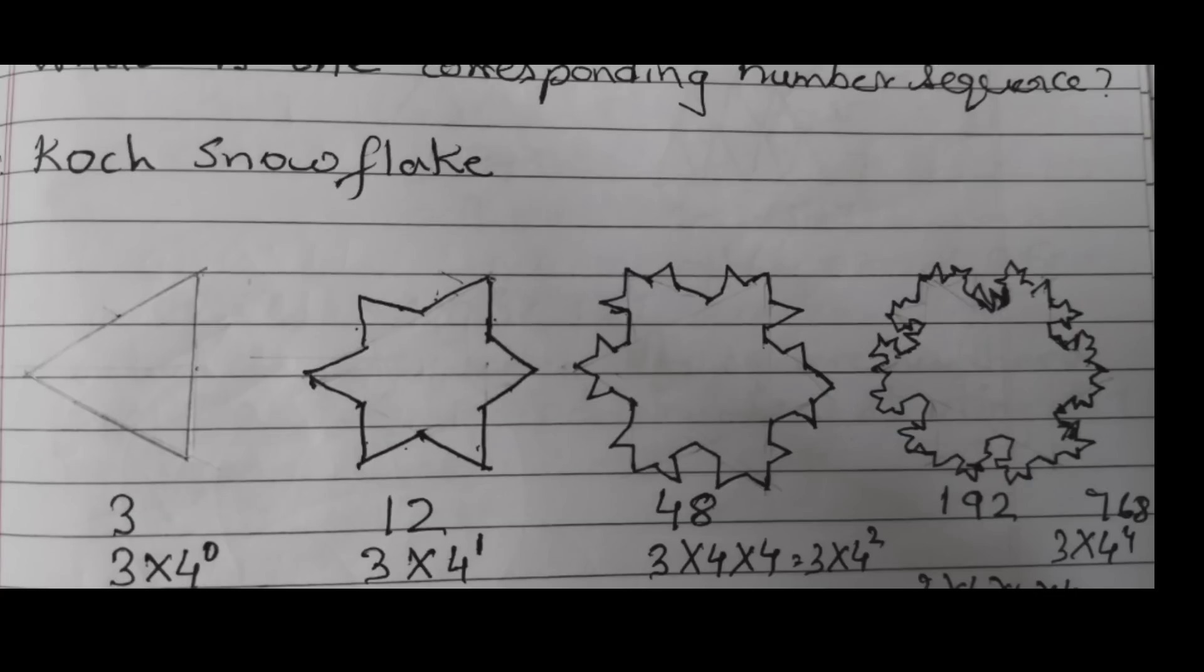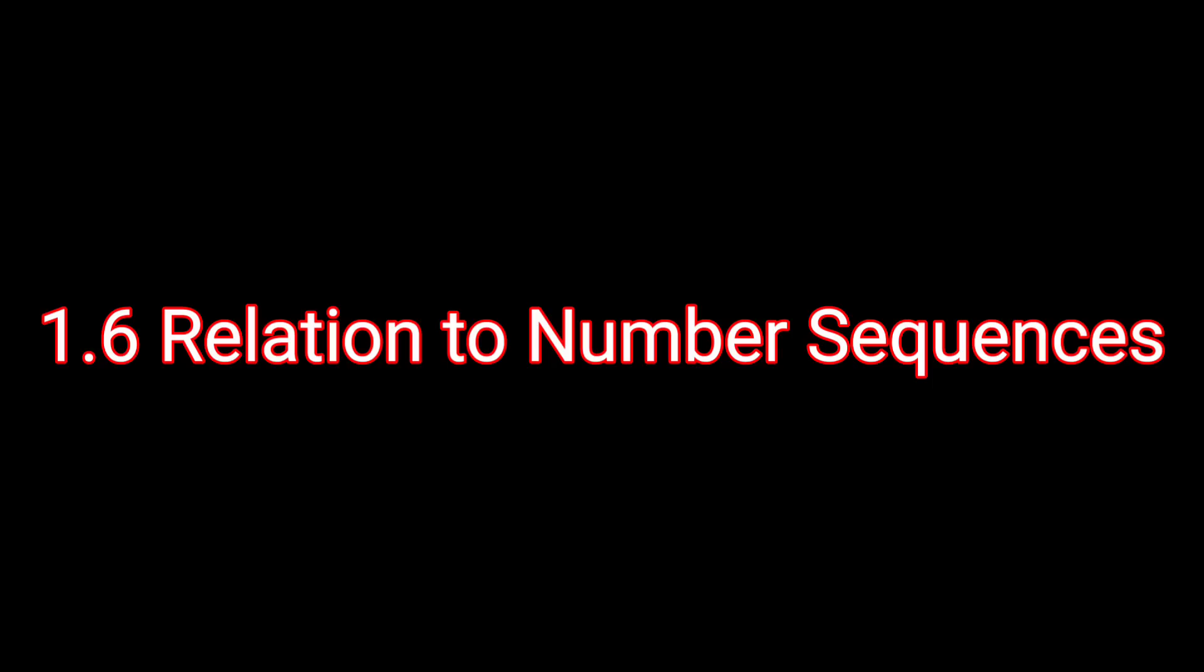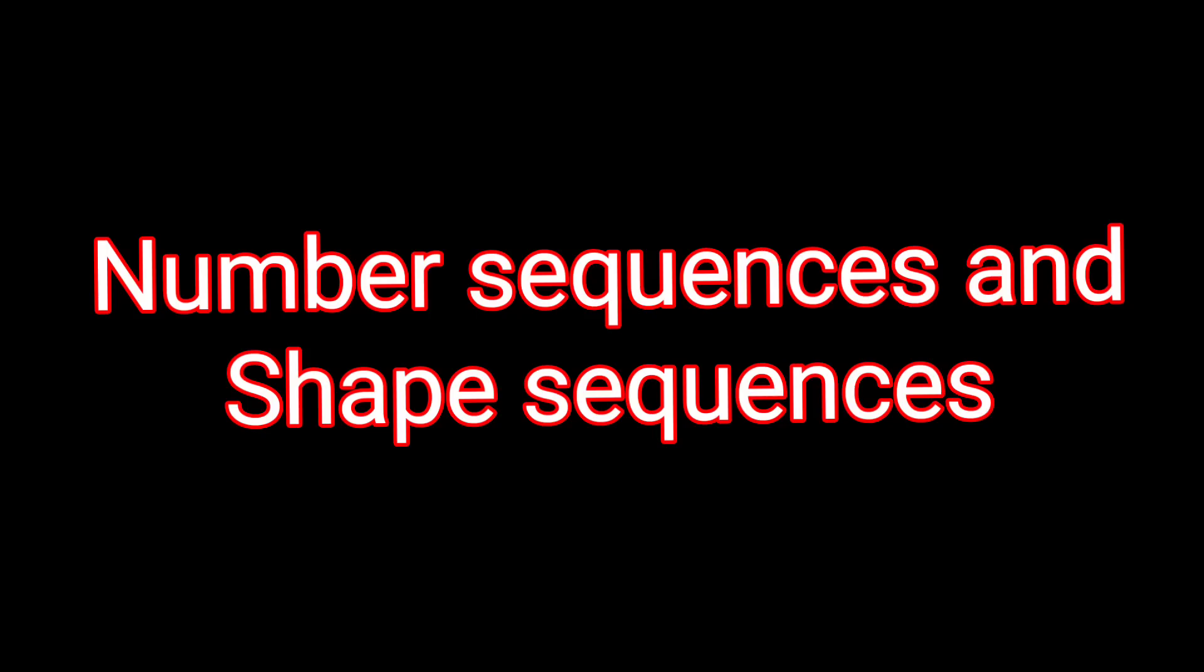And the last part of this chapter is 1.6 relation to number sequences. So here we are going to relate the number sequences and the shape sequences. This is a very small topic. If you just read it once, then you will understand what is there. So basically it's just relating the number sequence and the shape sequence. And then there are 5 questions given in figure it out. So this is all about chapter number 1.